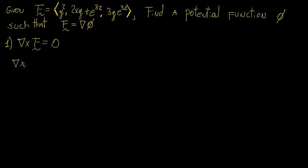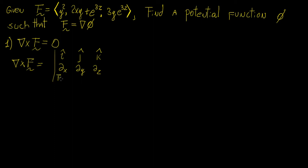So let's check that the vector field is conservative. We know the curl is going to be equal to the three-by-three determinant, with all three unit vector components, the partial derivative operators with respect to x, y, and z, and then the components fx, fy, and fz.